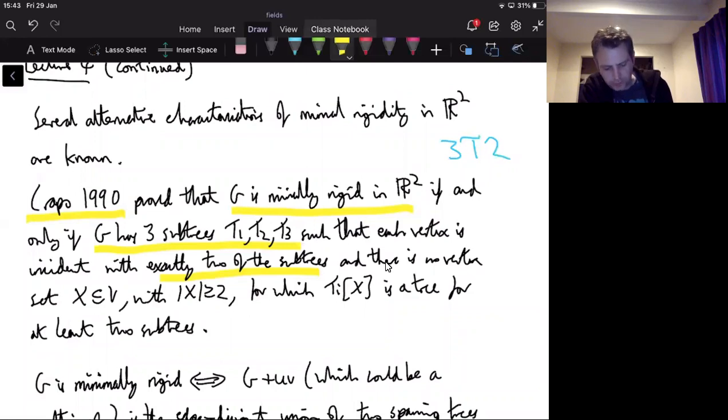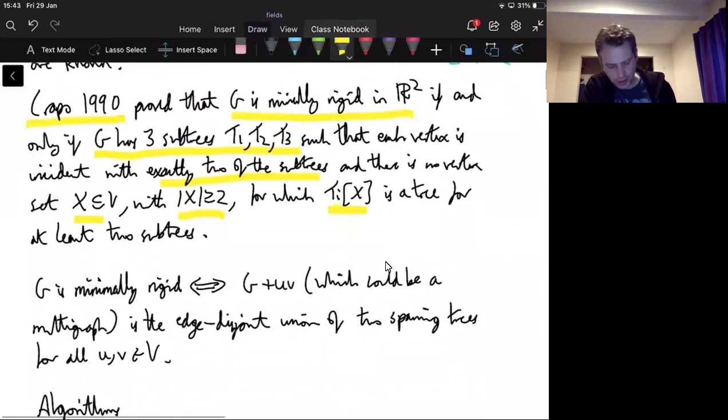And then just to be careful, there is no vertex set X, besides at least two, for which the subgraph of the tree induced by X is also a tree for at least two subtrees. So this is a bit of a mouthful, but you can play about with this if you like. So it's three trees, and every vertex is in exactly two of the trees.